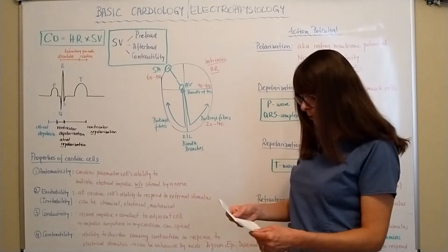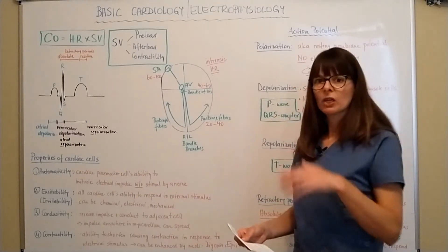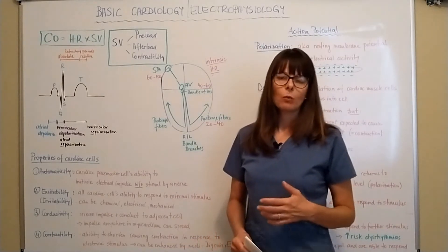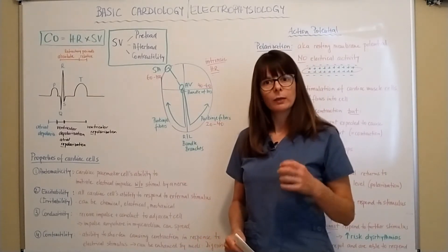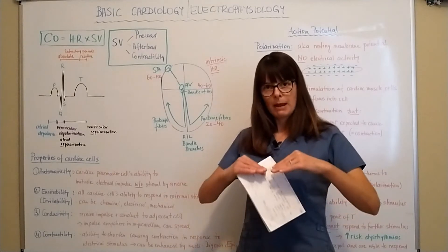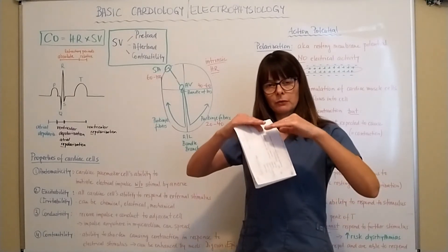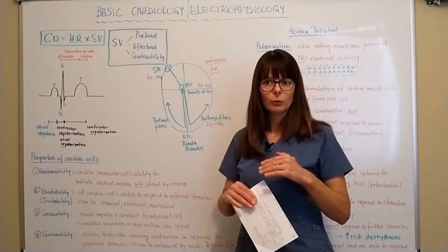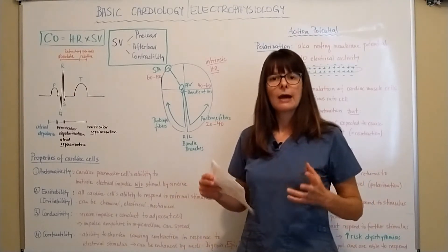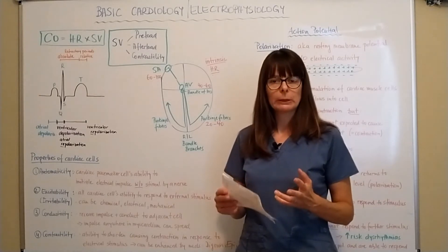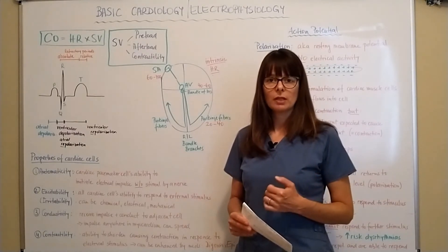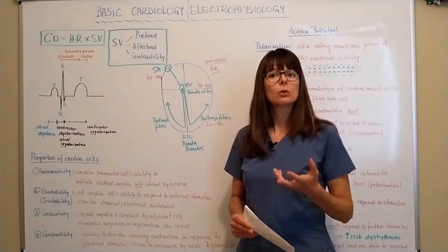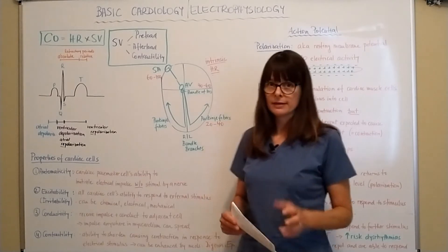Preload is the ventricular filling during diastole. When the ventricles are not contracting and are at rest, they get passively filled by the blood that flows into the heart. Depending on how much blood volume they receive depends on how strong the cardiac output will be. For example, if a patient is dehydrated or has anemia, the preload will be less and therefore cardiac output will be less.